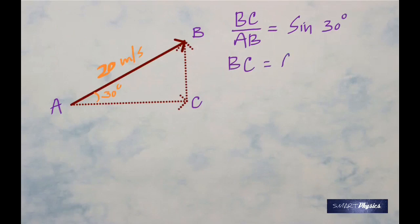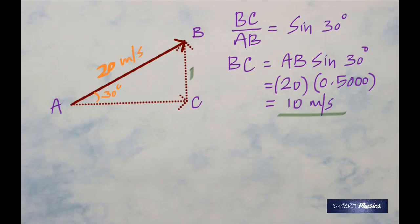Therefore BC is AB times sin 30. AB is 20, so 20 times sin 30 from your calculator is 0.5. On multiplication you get 10 meters per second.